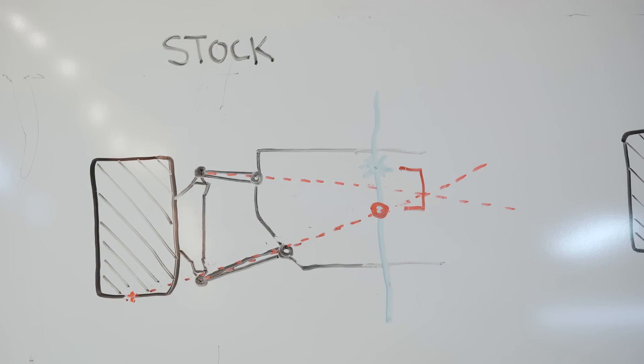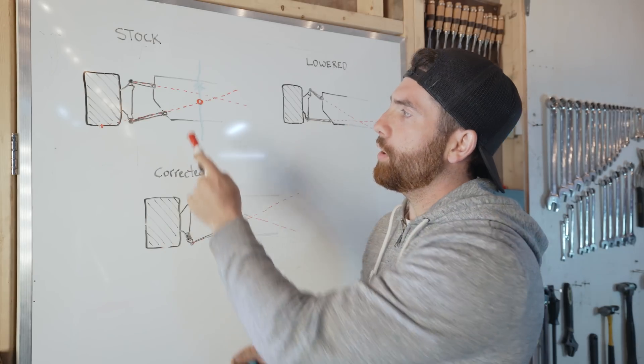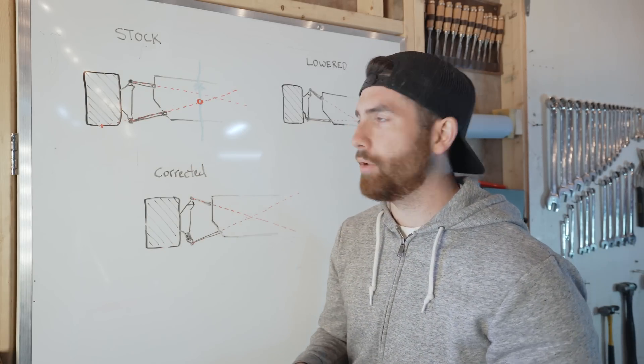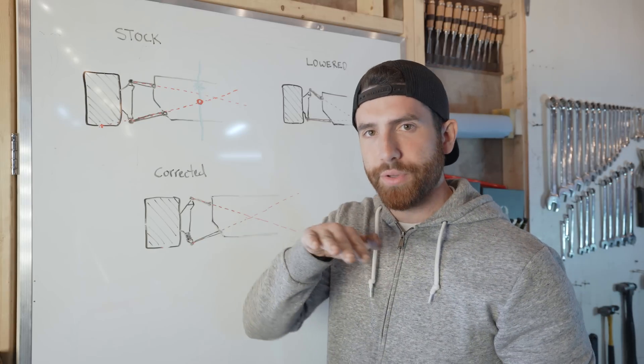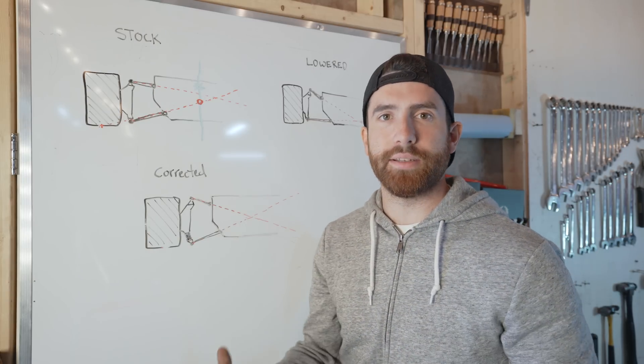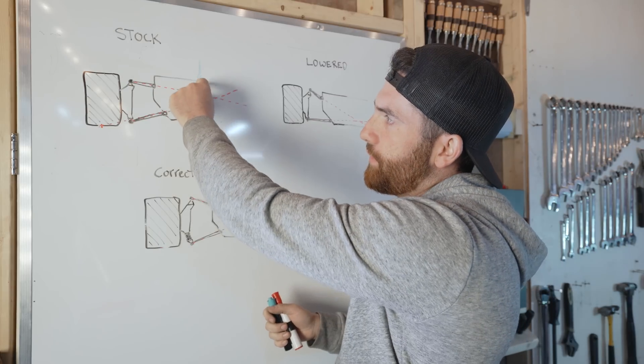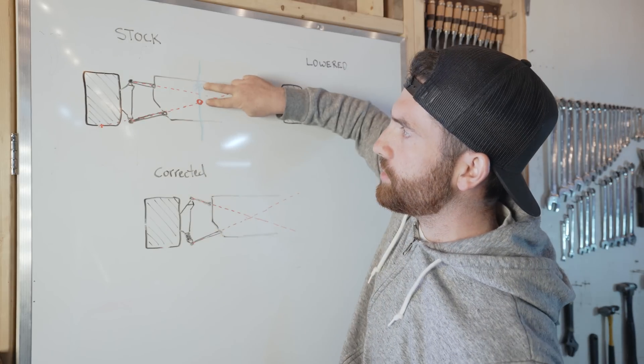And where this line that goes from the center line of the car meets the instantaneous center along the center line of the car, this here is your roll center. Now what you want is that you want your roll center to be as close to the center of gravity of the car as possible.